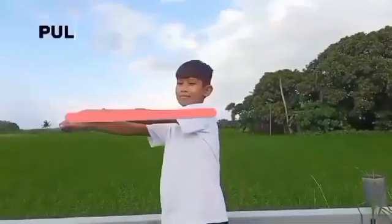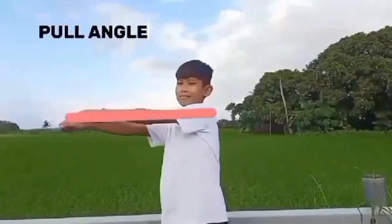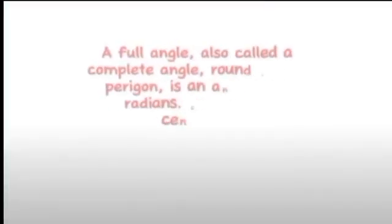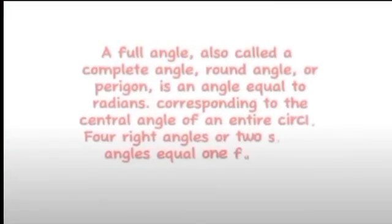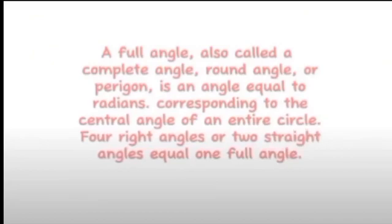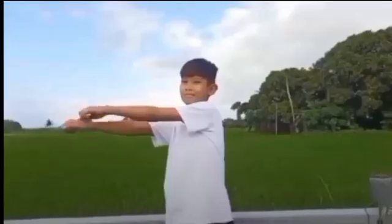Full angle. A full angle, also called a complete angle, round angle, or perigon, is an angle equal to 2π radians, corresponding to the central angle of an entire circle. Four right angles, or two straight angles, equal one full angle.